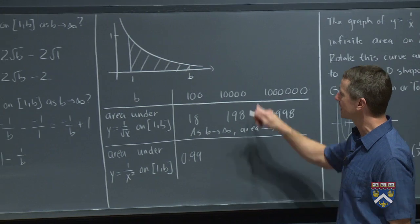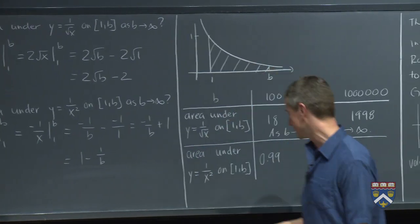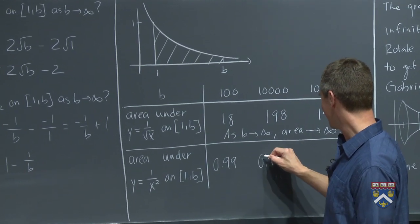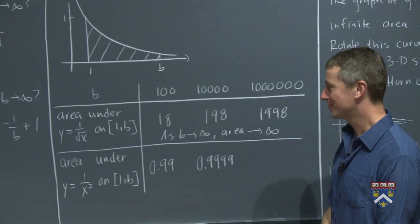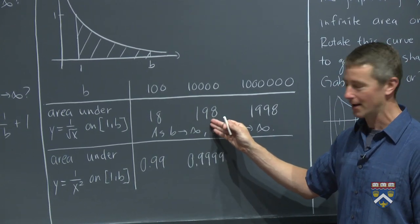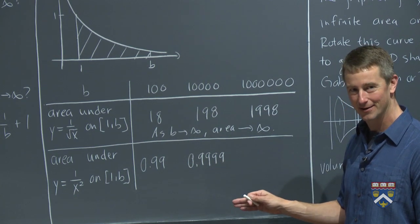But now when we plug in 10,000, we get 1 minus 1 over 10,000, which is 0.9999. Wow, this got a lot of area. This added 180 units of area. This added only 0.0099 units of area, almost none.